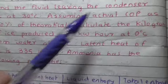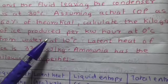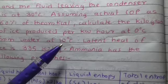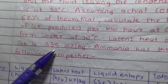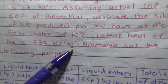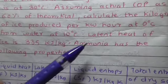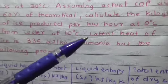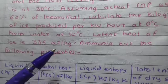We have to calculate how many kilograms of ice has been produced. For that, latent heat of ice is given as 335 kilojoules per kilogram. If it is not given in the problem, this value we should know.